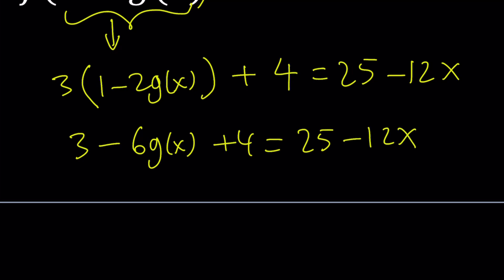In this case, g of x is our variable. So we're going to find it in terms of x. Let's go ahead and add some numbers up. 3 plus 4 is 7. So negative 6g of x. I'm going to subtract 7 from 25. So 25 minus 7 is 18. I'm not very good at arithmetic, but this time hopefully I got it right.